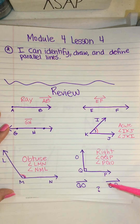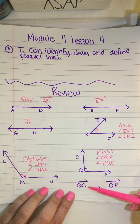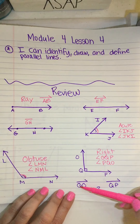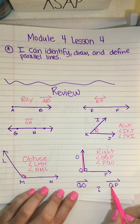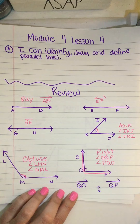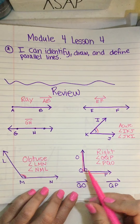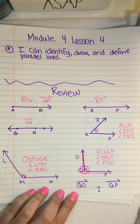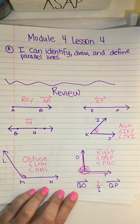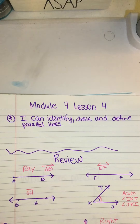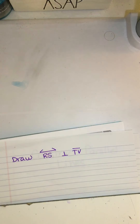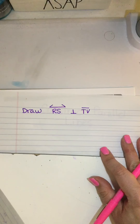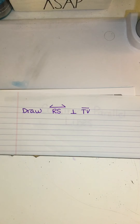I want to know something else — how is ray QO related to ray QP? Well, they meet right here at point Q and they meet at a 90 degree angle, so that means they are perpendicular to each other. The next review question: can you draw line RS that is perpendicular to line segment TV? This is a review from yesterday. Do you remember how to draw those perpendicular lines?